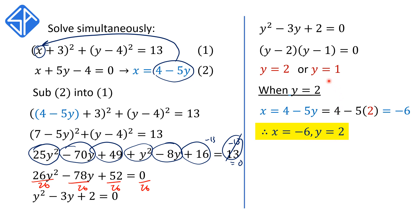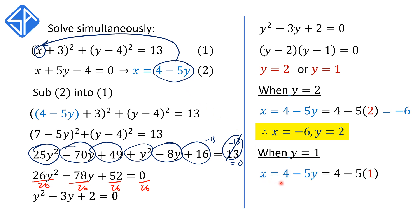We also need to look at the case when y equals 1. We substitute this value into x equals 4 minus 5y, replacing y with 1 to get 4 minus 5 times 1, which is 4 minus 5, which is negative 1. So our second solution is x equals negative 1 and y equals 1.